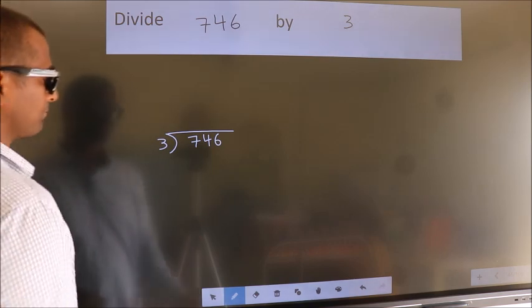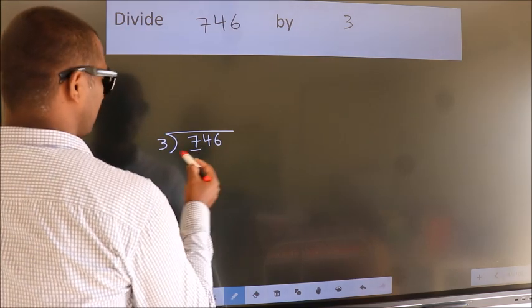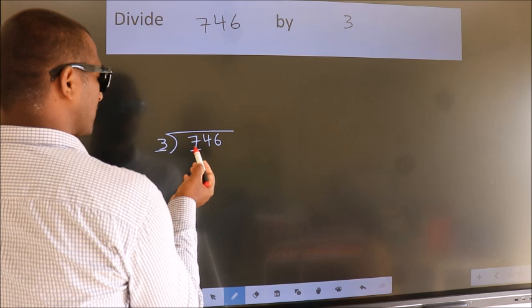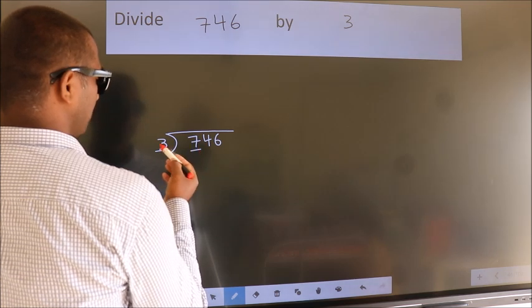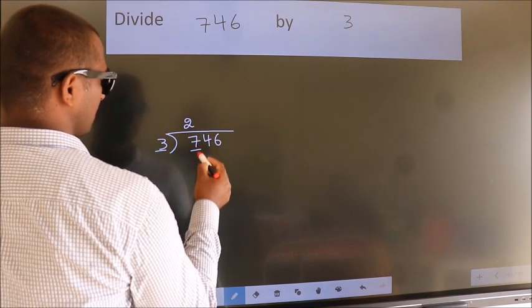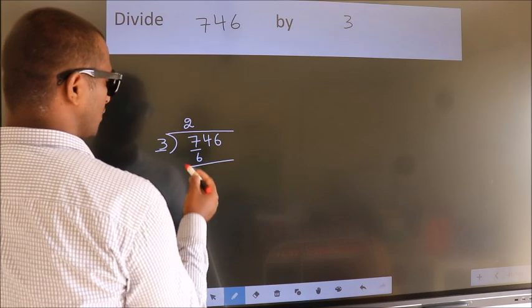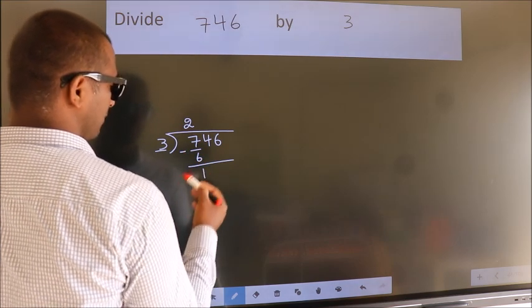Next, here we have 7, here 3. A number close to 7 in 3 table is 3 2's 6. Now we should subtract. We get 1.